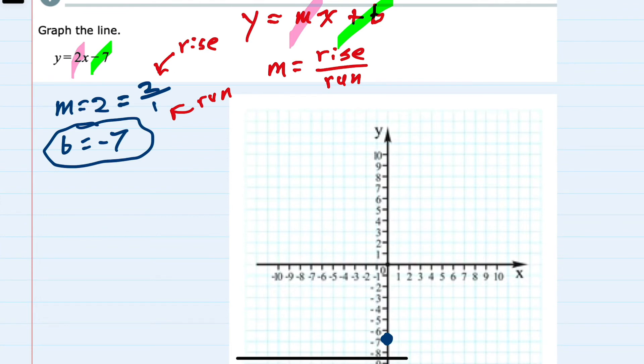And from there we look at the slope of 2 over 1. So from that point, the y-intercept minus 7, we would go up 2 and over 1.